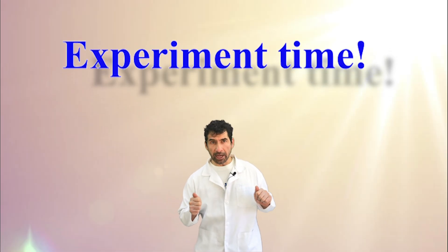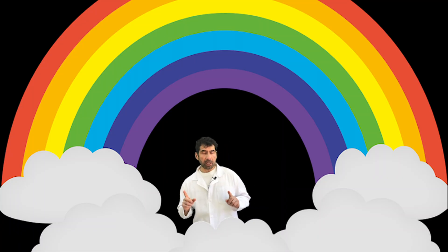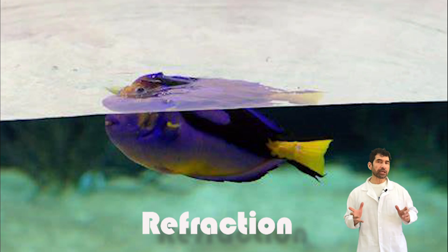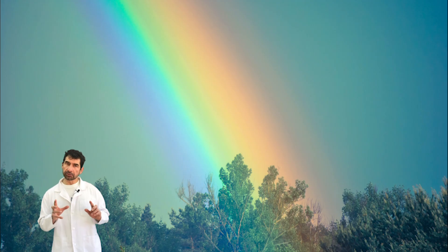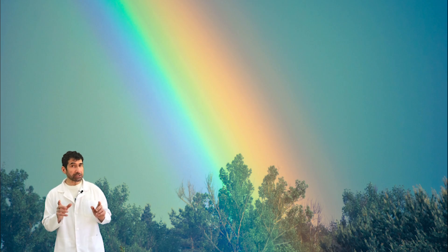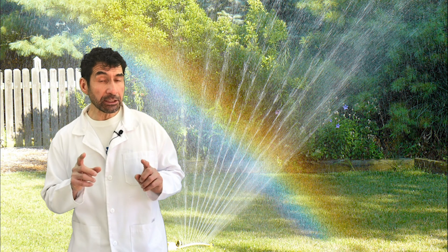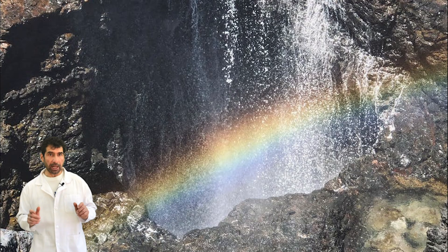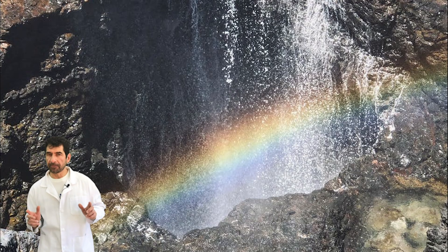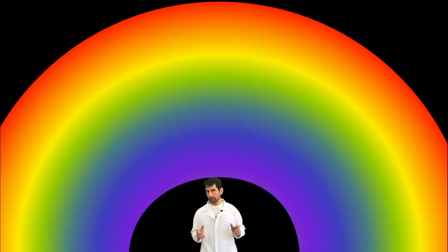Experiment time. Rainbows are a product of refraction and reflection. Sunlight separates into colors as it passes from the air into water. The colored light is reflected off the back of the drop and it is refracted again as it passes into the air.